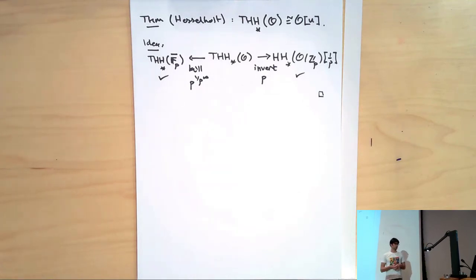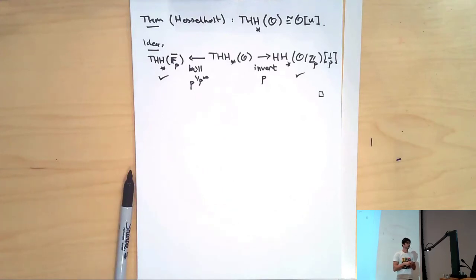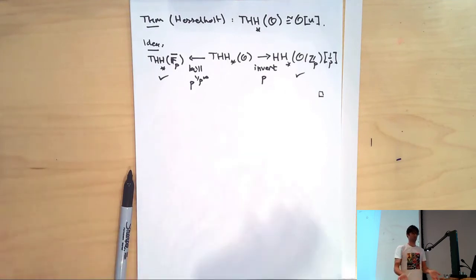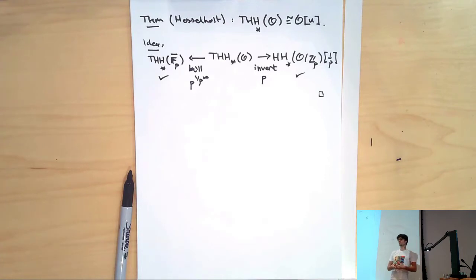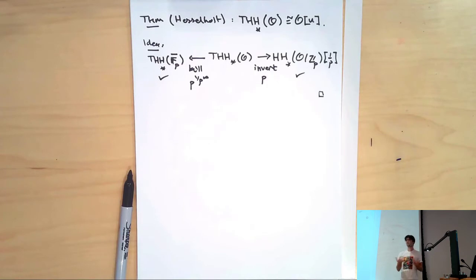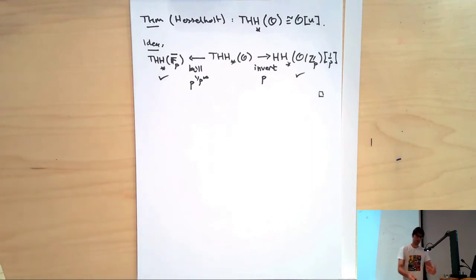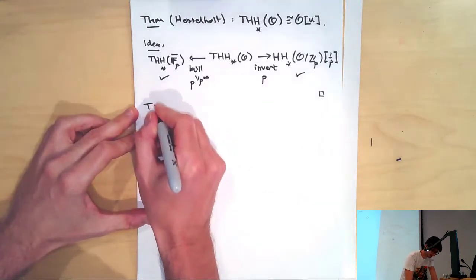One then gets some formal consequences. This morning we saw that for any FP algebra, its topological Hochschild homology was built by assembling various copies of Hochschild homology according to certain shifts — and we'll get exactly the same result here with the same proof. In the particular case of a smooth algebra over FP, this would let me explicitly describe all the topological Hochschild homology groups as direct sums of various copies of differential forms. The same will be true here: if I take a smooth algebra over O or over any perfectoid ring, I can describe its topological Hochschild homology groups as explicit direct sums of copies of differential forms.